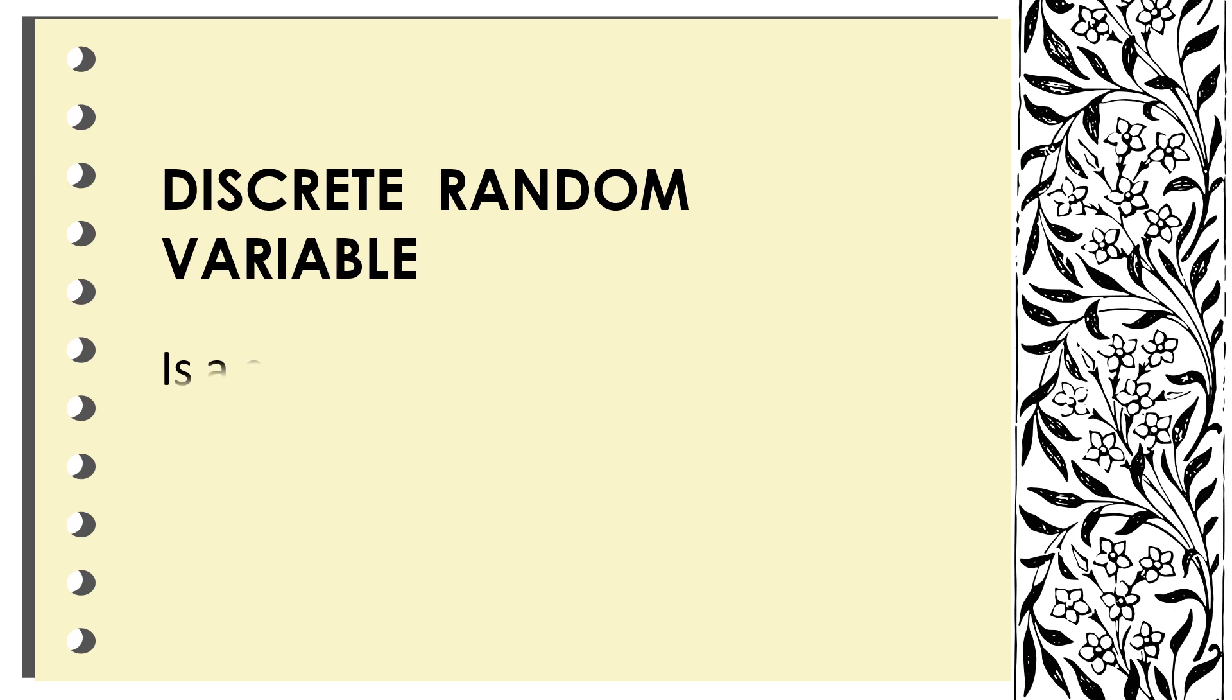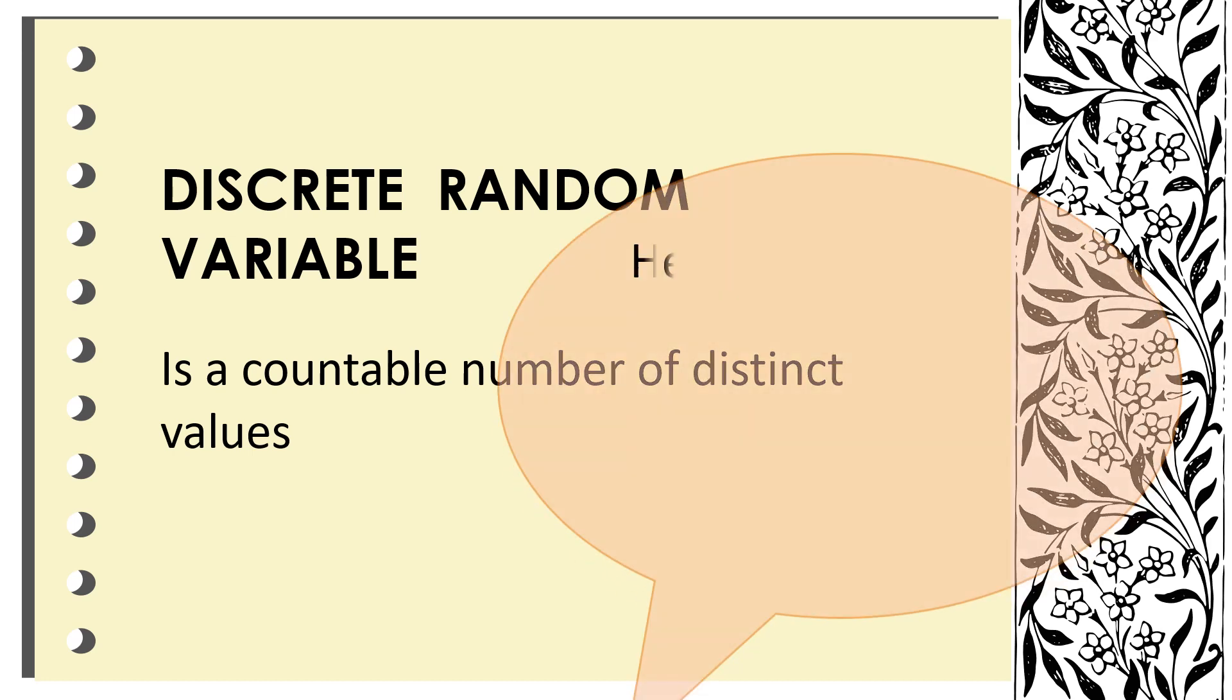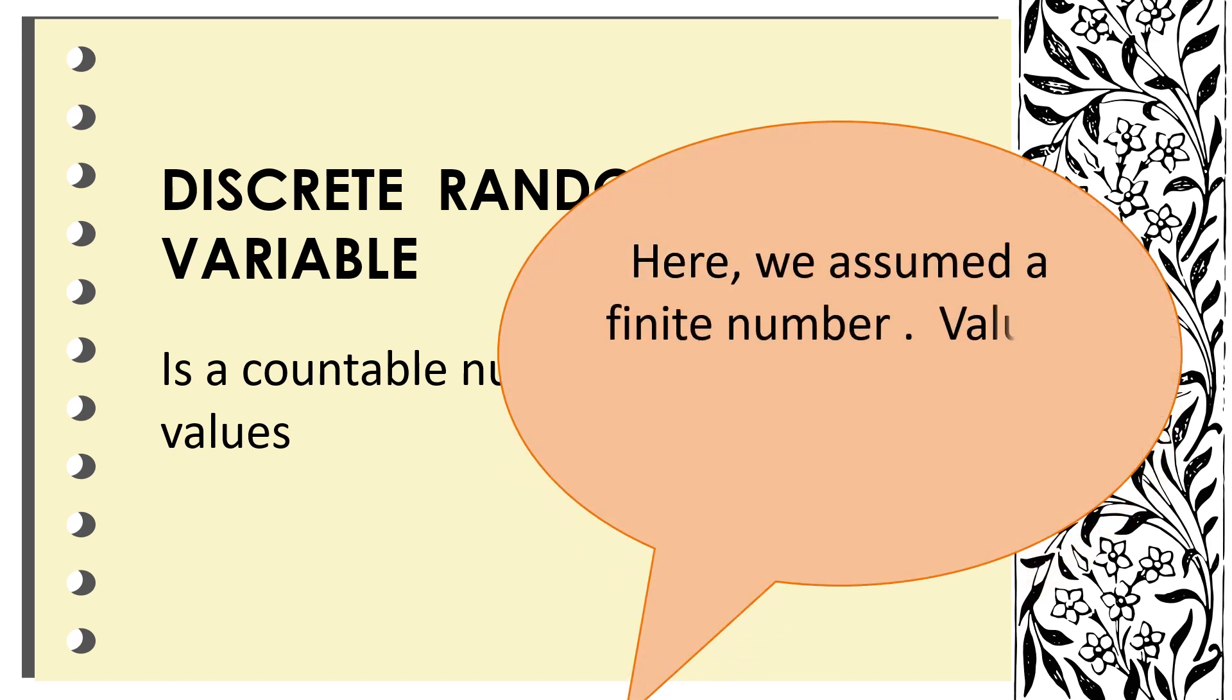Let us proceed. What do we mean by discrete variable? It is a countable number of distinct values. Discrete are numbers that can be counted. Here, we assume a finite number. Values are obtained by counting.